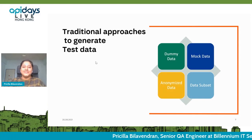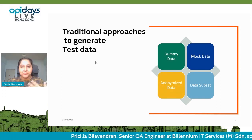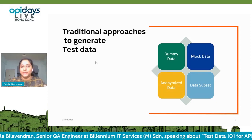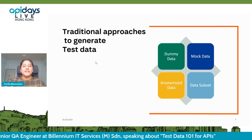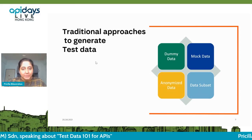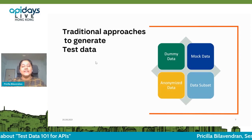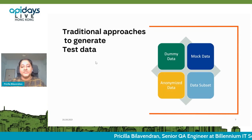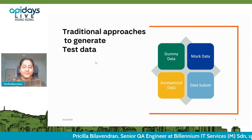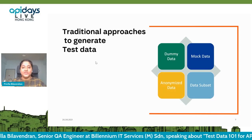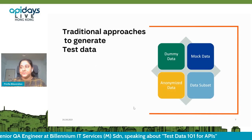Data subset is the fourth category. There are some fields — especially in finance, which is very confidential — where the data is not too confidential, so production data can be used for testing. In that case, a subset of production data is directly used for testing purposes. So these are the four major approaches generally used to create test data: dummy, mocked, anonymized, and data subset.